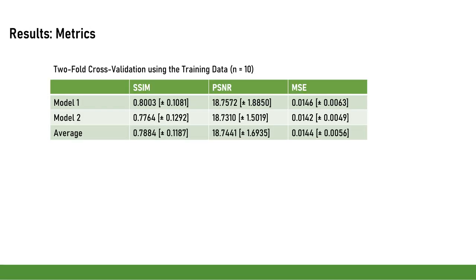We obtain the following metrics for the two-fold cross-validation we performed using the training data. On average, the SSIM is 0.7884, PSNR is 18.7441, and the MSE is 0.0144.